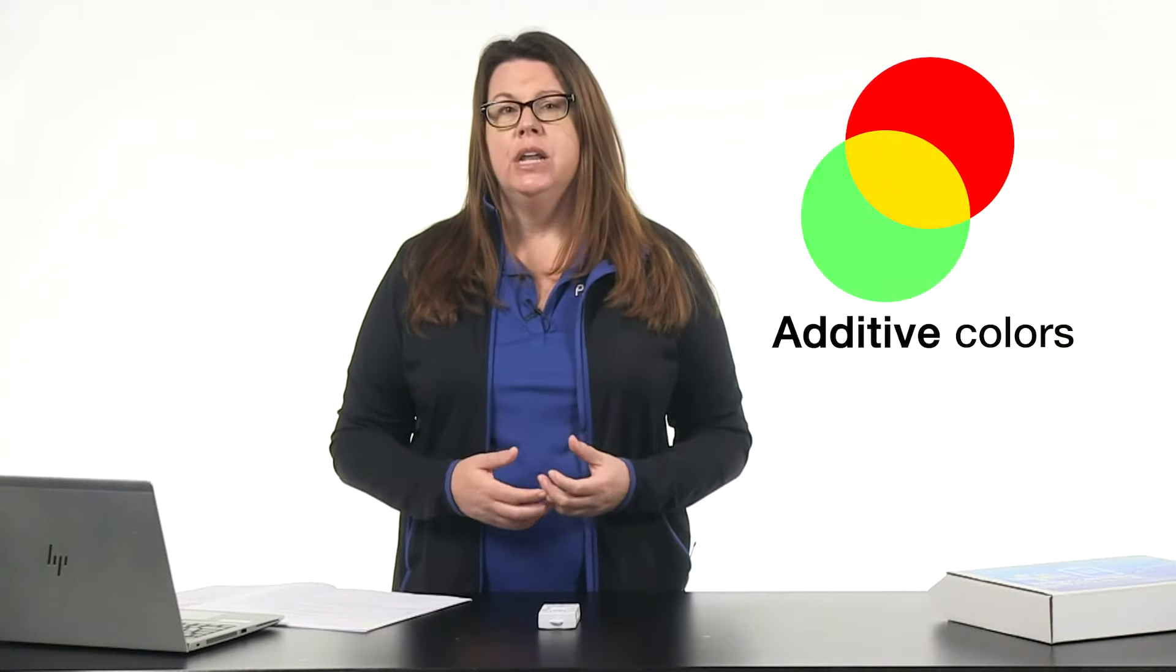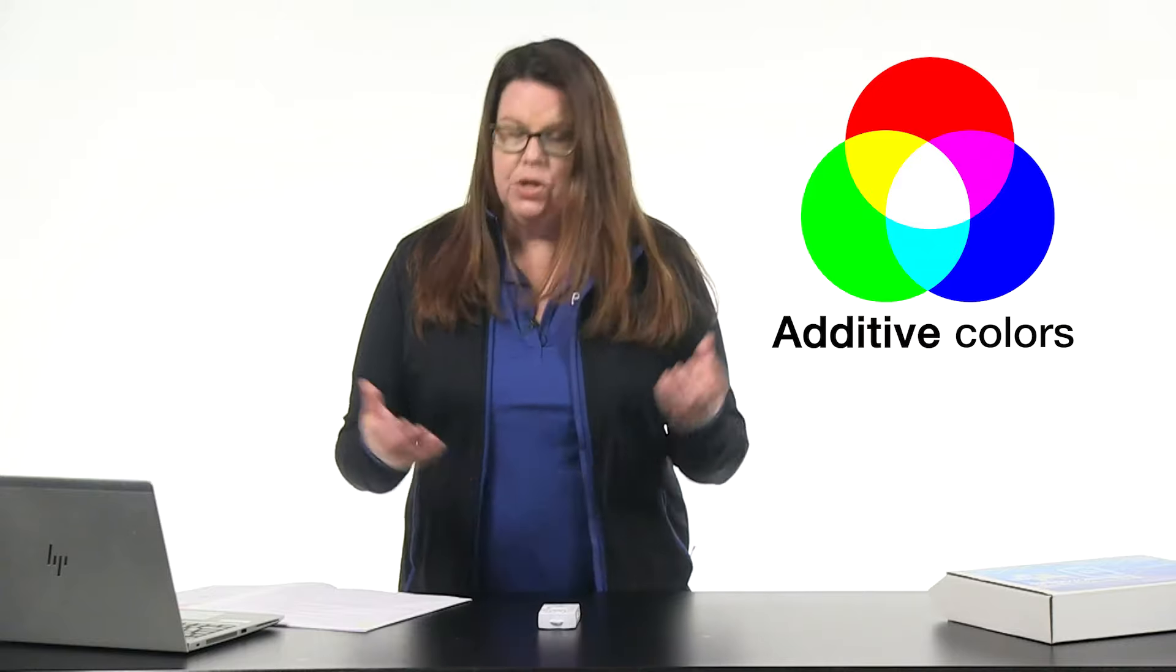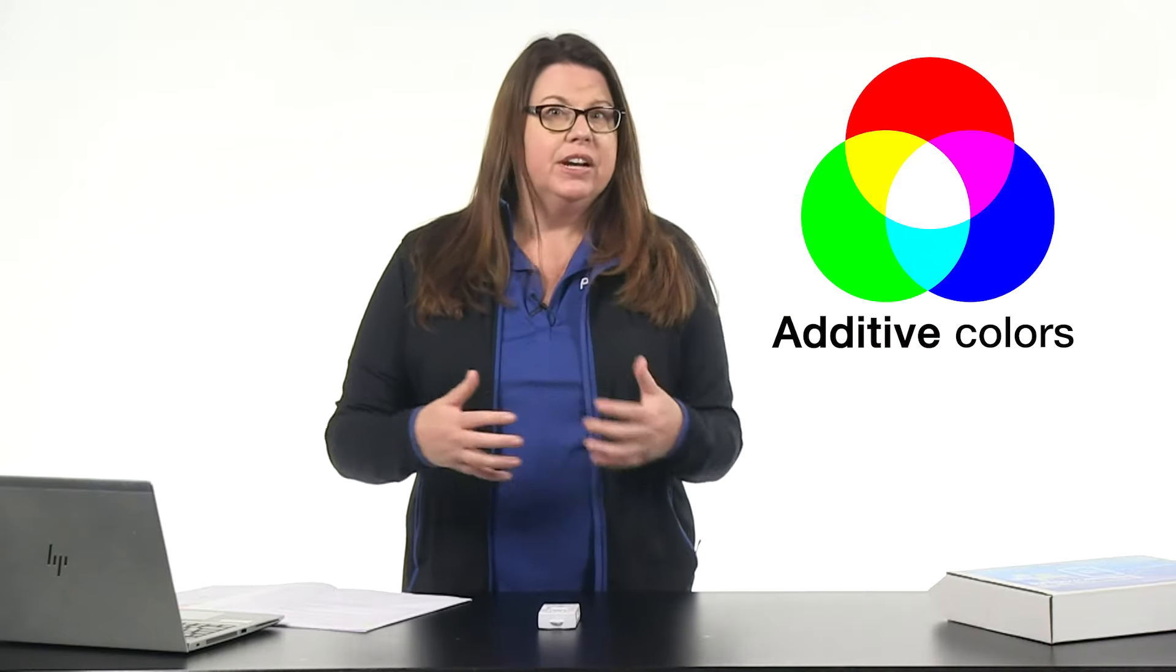All right, so what is an RGB color model? Well, essentially it's an additive color model that uses red, green, and blue lights. When you mix these together, you get various different colors. What's really neat about RGB LED is that we use it in digital devices. You see it on TV monitors, on your computer monitors, and even in digital camera views. So RGB is used everywhere.